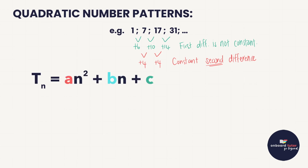The general term, or nth term, of a quadratic number pattern is expressed as Tn = an² + bn + c. We need to discover the values of a, b, and c. This quadratic formula may be given to you on a formula sheet, but the methods we'll use to find a, b, and c are not — so you will need to memorize these.